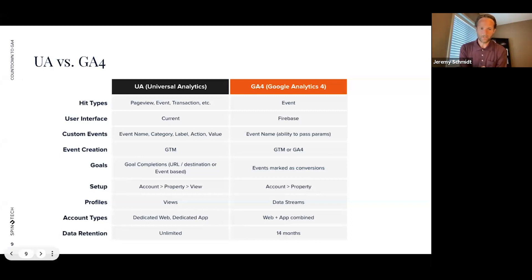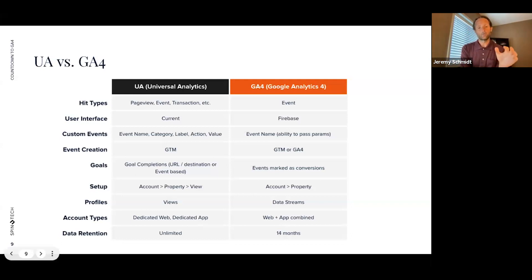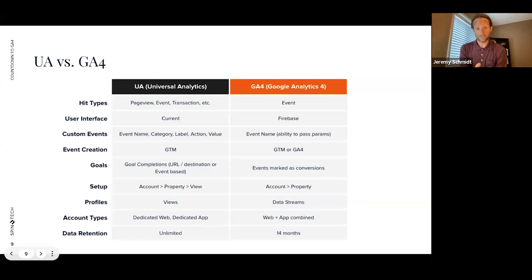Another change worth pointing out is the setup structure. Today with Universal Analytics you have an account, a property, and under that property you can have views — test views, filtered views. With Google Analytics 4, you still have the account and property, but views are going away completely. Instead, you will have data streams that can be configured based on the settings you want.